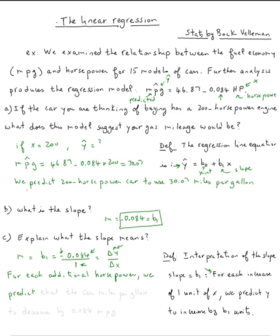So predict, what is the y? The y is the car miles per gallon. We predict the car miles per gallon to decrease by 0.084 miles per gallon. And that's it for this example.